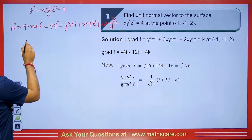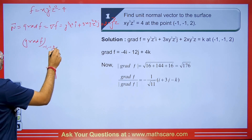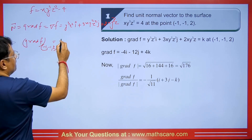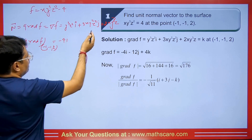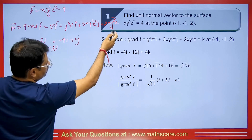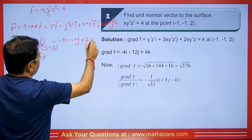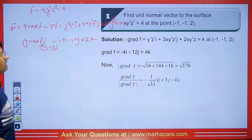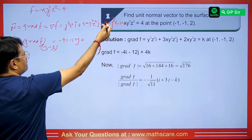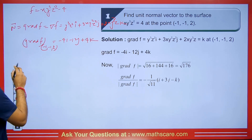Now we put in the point (−1, −1, 2). Wherever there is x and y we substitute — both are minus — and put 2 in place of z. Then it becomes minus 4i, minus 12j, and plus 4k. We have got the normal vector.